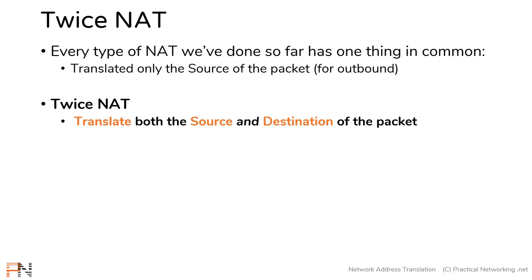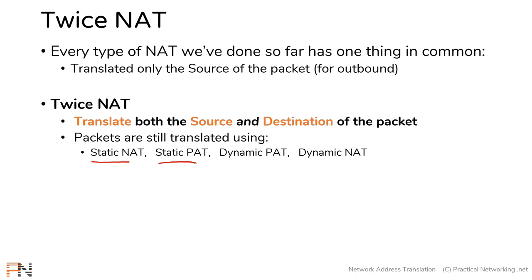A twice NAT is actually translating both sides of the packet — both the source and the destination. You're actually doing NAT twice: once on the source of the packet, and then again on the destination of the packet. Hence, twice NAT.